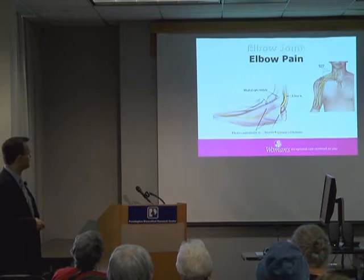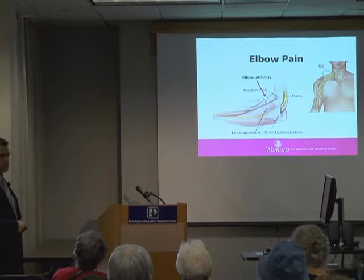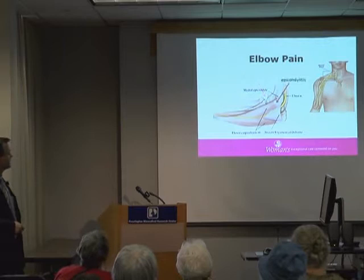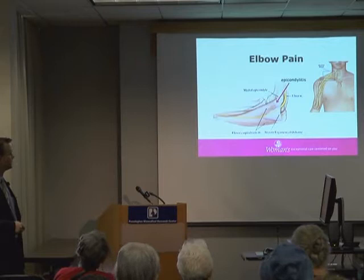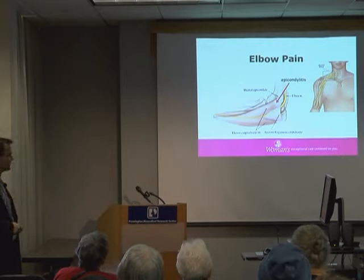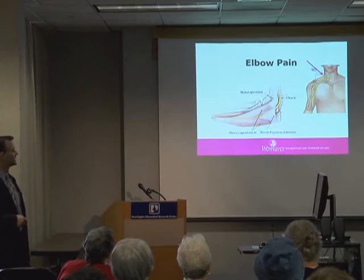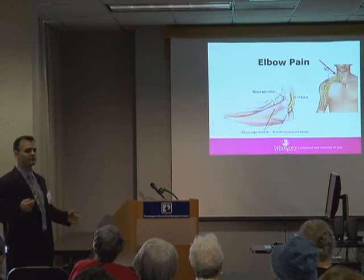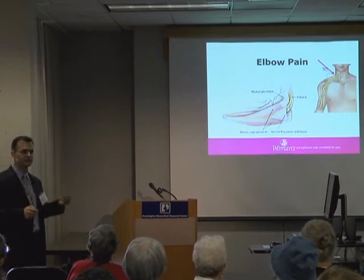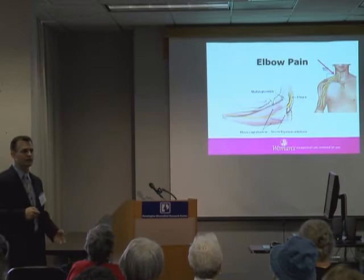We can get pain from the actual joint where the cartilage is — roughening of the cartilage leads to elbow arthritis. We can also irritate the tendons around the elbow — something called tennis elbow or lateral epicondylitis. Then there can be irritation and compression of the nerve that goes around the elbow. Pain can also be referred from somewhere else — for example, a disc herniation in the neck pinching a nerve can cause you to feel pain in the elbow rather than the neck, which can be tricky to recognize.